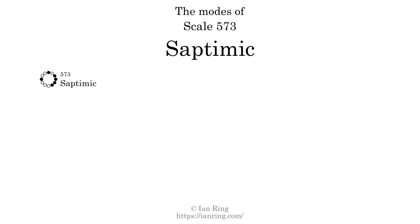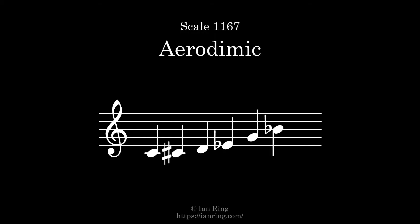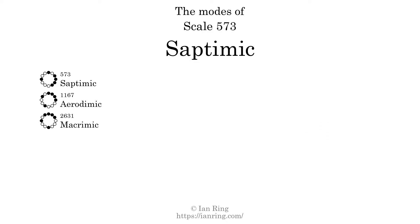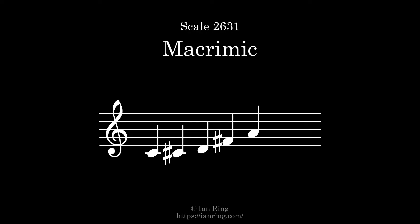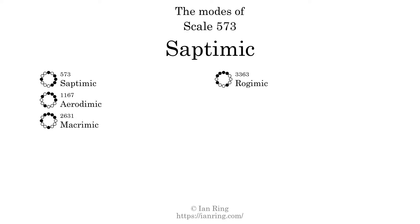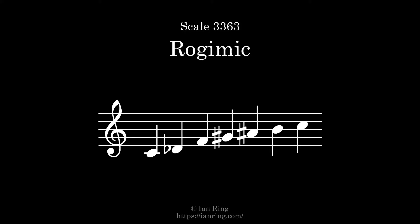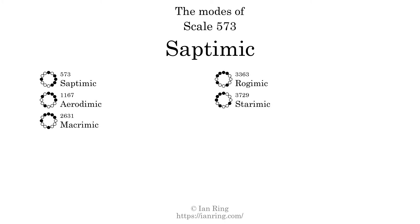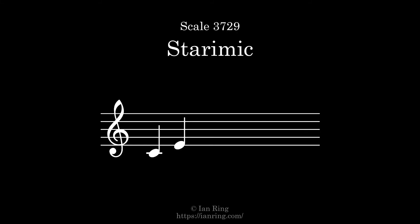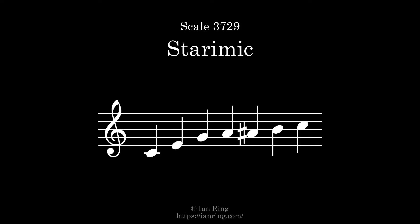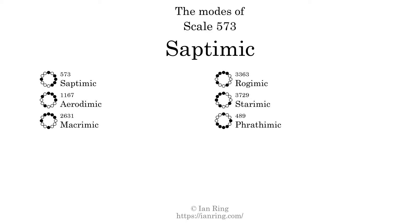This scale has 6 modes. The first mode is itself. The second mode is scale 1167, also known as aerodimic. It sounds like this. The third mode is scale 3631, also known as aerodimic. It sounds like this. The fourth mode is scale 3363, also known as aerodimic. It sounds like this. The fifth mode is scale 3729, also known as aerodimic. The sixth mode is scale 489, also known as aerodimic.